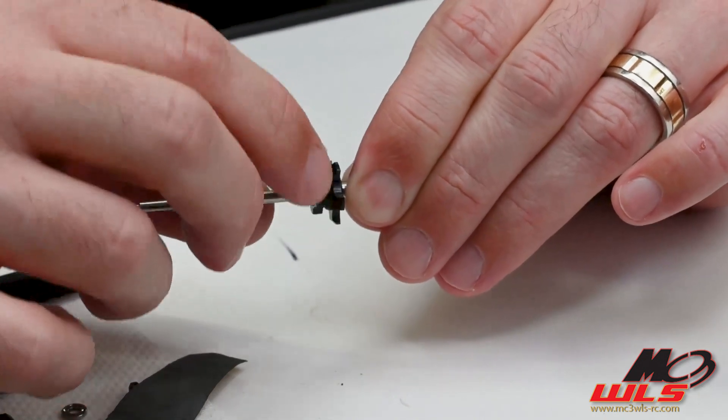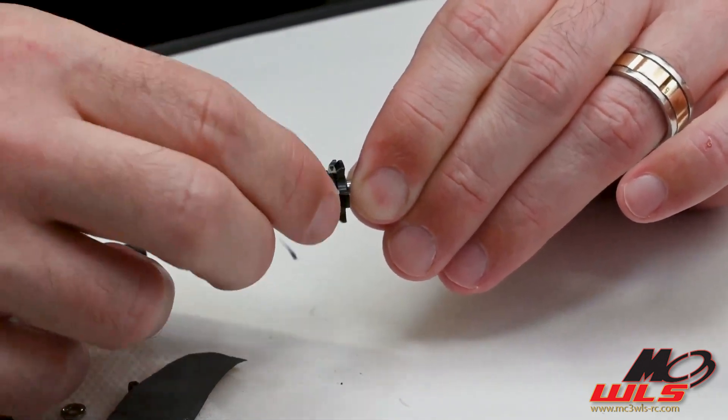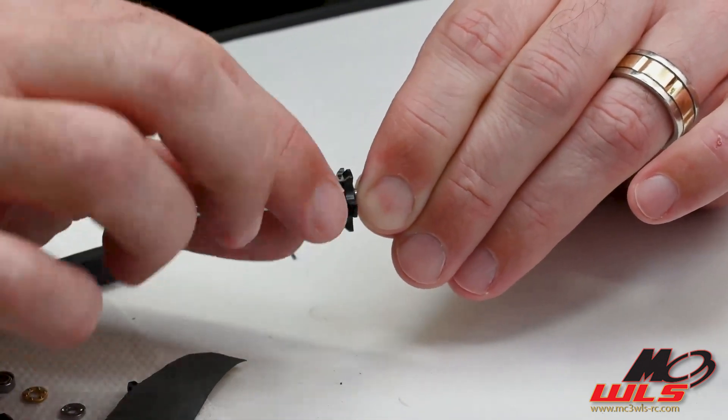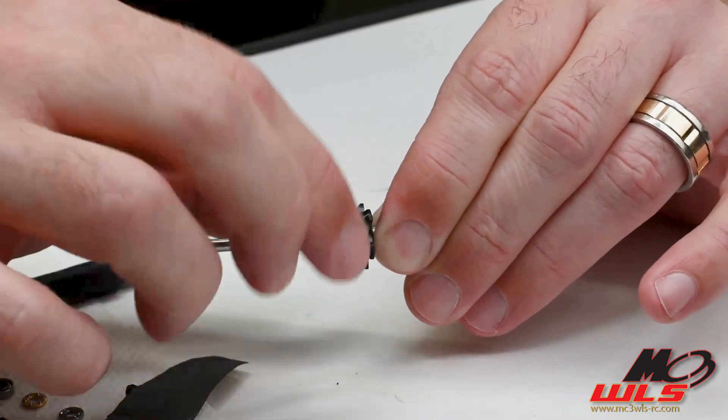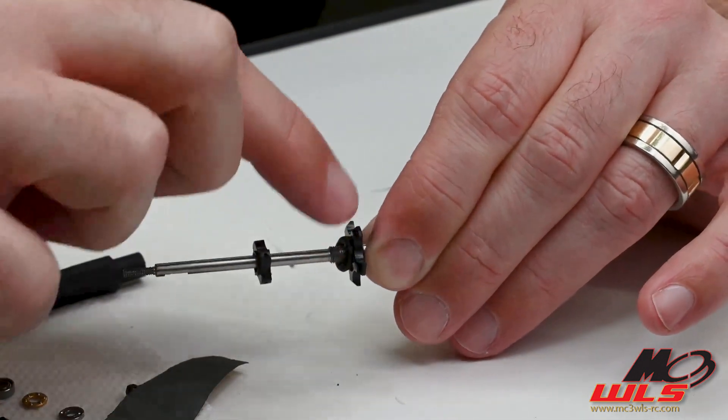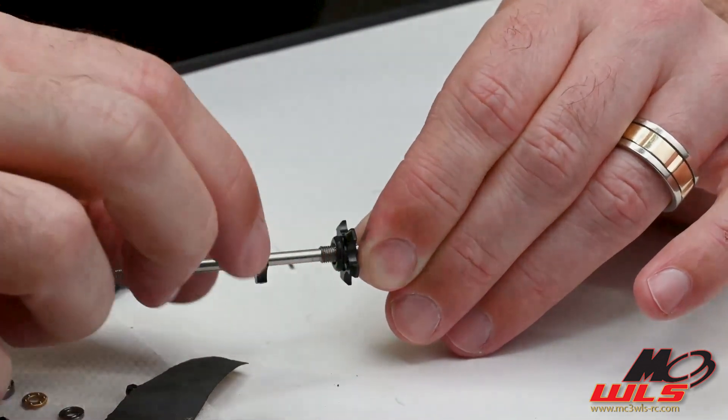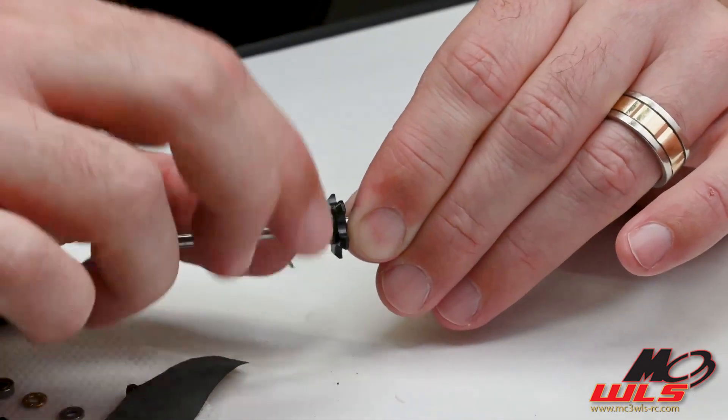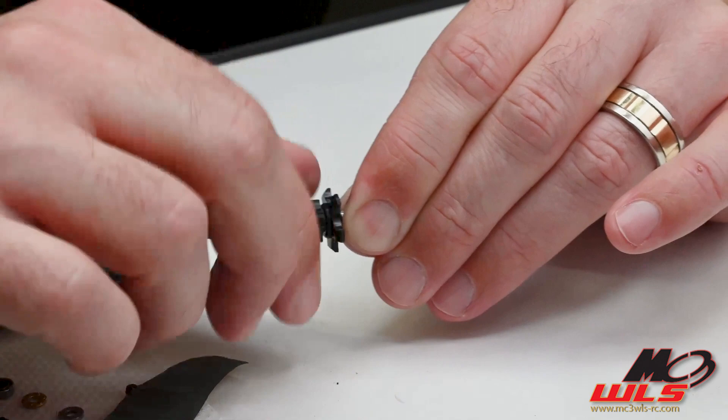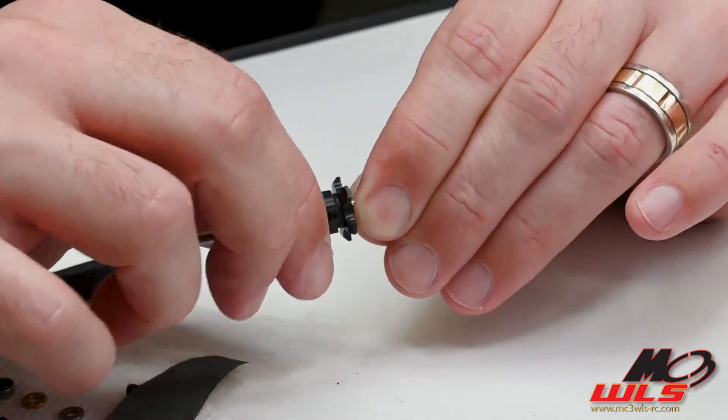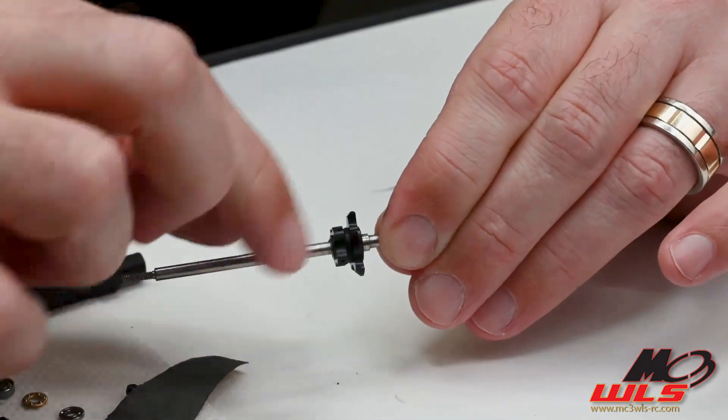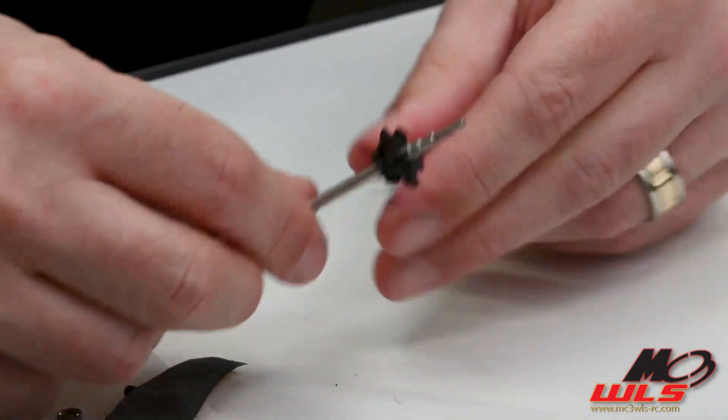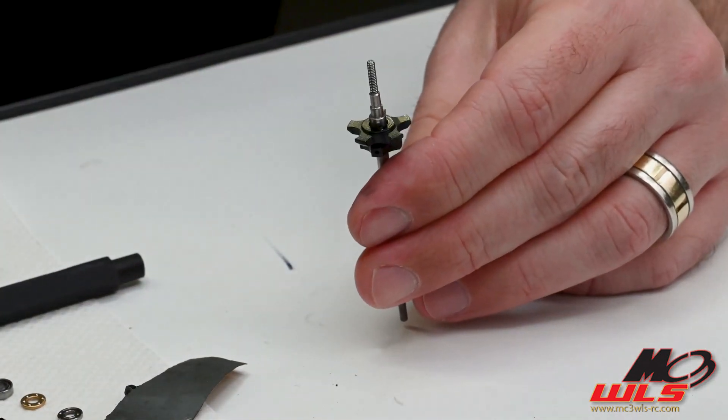In some cases, this nut can be loose on the shaft. So in that case, you will want to put some Teflon tape around the thread here and then that way it can be tight and it won't back off or loosen while racing. I do this with all of my differentials and put thread lock tape there, plumber's tape.